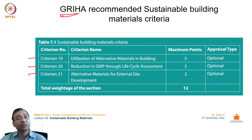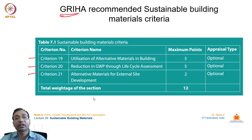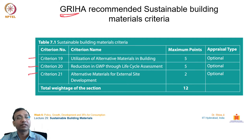The third criterion talks about alternative materials for external site development, which has two dedicated points. It covers alternative materials for outside the building — for example, boundary walls, pavers, landscaping, and other site elements. These can use locally available materials as an alternative to manufactured or fabricated materials from factories. The focus is on saving on ecological impacts from conventional materials, and this is the purpose of going for sustainable building materials in construction.